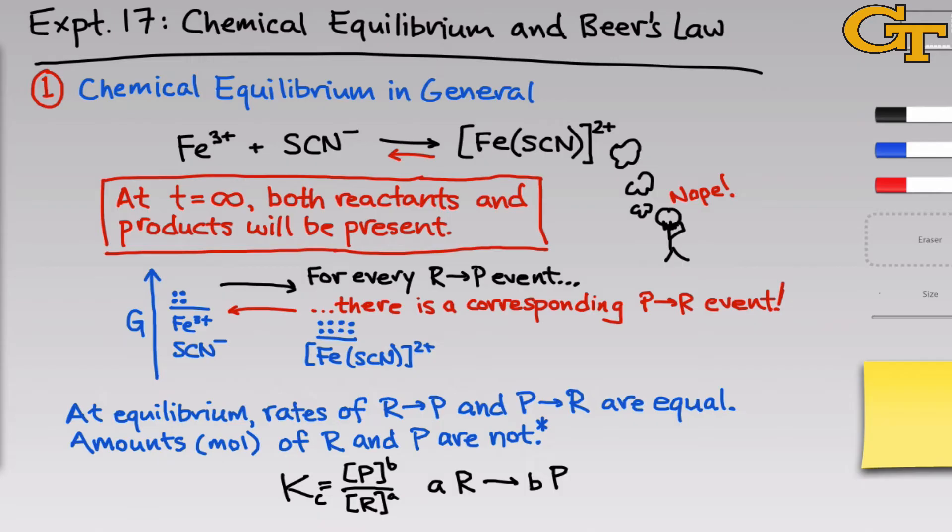Kc tells us, at a sufficiently large time, whether we'll have more products or more reactants around. The equilibrium constant is a really valuable piece of information that tells us whether a reaction will work or not to some degree.